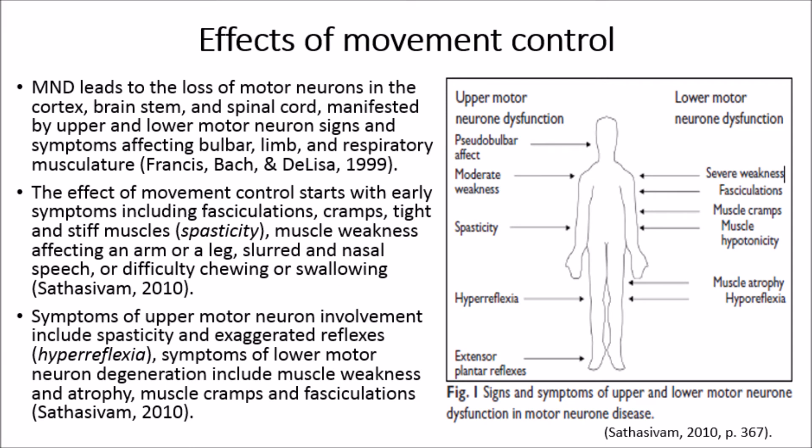MND leads to the loss of motor neurons in the cortex, brainstem and spinal cord, manifested by upper and lower motor neuron signs and symptoms affecting bulbar, limb and respiratory musculature. Early symptoms include fasciculations, cramps, tight and stiff muscles from spasticity, muscle weakness affecting an arm or leg, slurred and nasal speech, or difficulty chewing or swallowing.